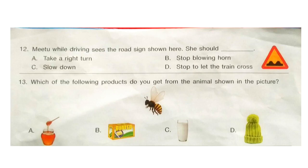Question 12: While driving, she sees the road sign shown here. She should dash. Look at the sign — what does it say? It means there is a bump ahead, so one should slow down. The answer is C — slow down.